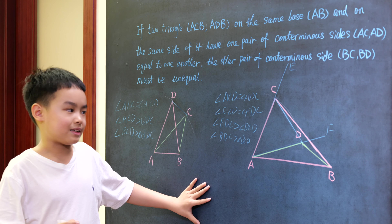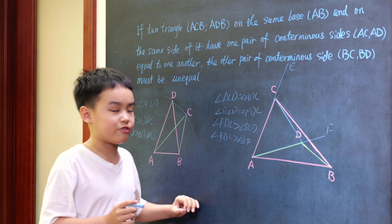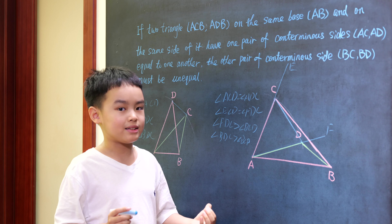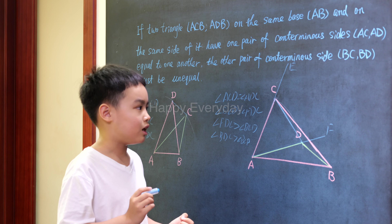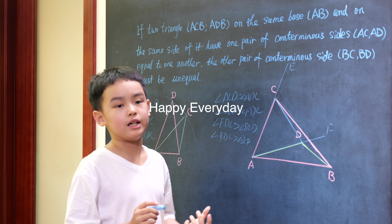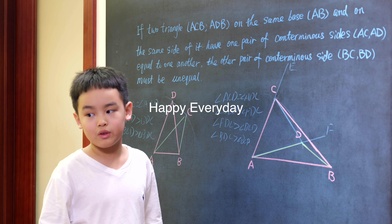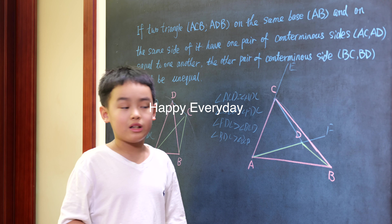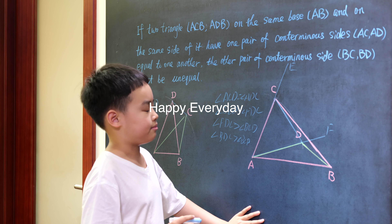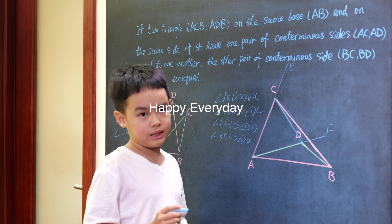And if vertex D dropped on the line CB, it would be very evident to see that BD is equal to BC.